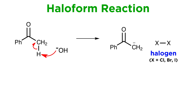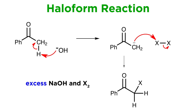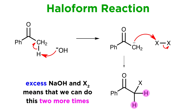Now we introduce excess diatomic halogen, which we will represent generally as X2, which can represent chlorine, bromine, or iodine. We know that this can act as an electrophile due to the polarizability of the halogen-halogen bond, so the enolate will attack this halogen and kick off the other as a halide ion. Because both the strong base and halogen are in excess, and because there are two more alpha protons on this carbon, we can do precisely the same thing two more times.